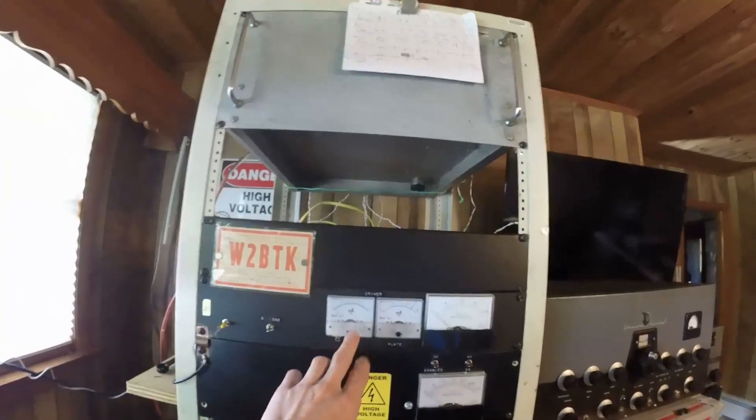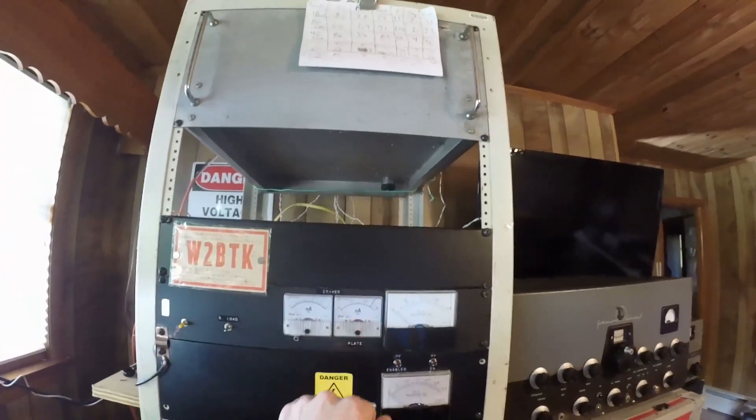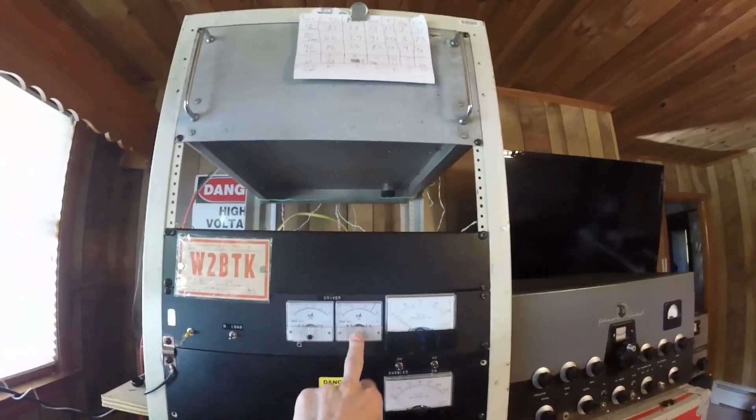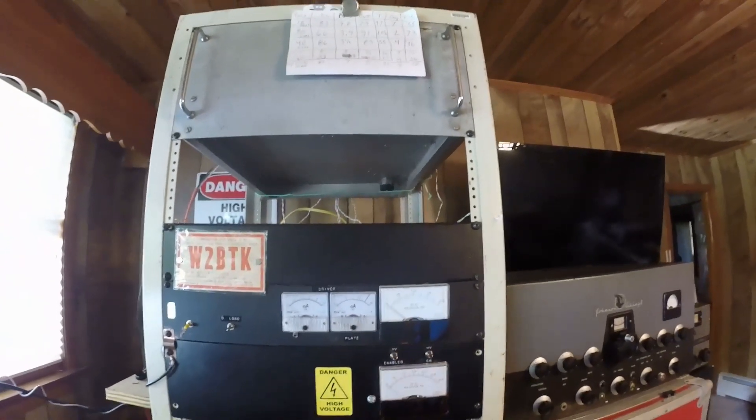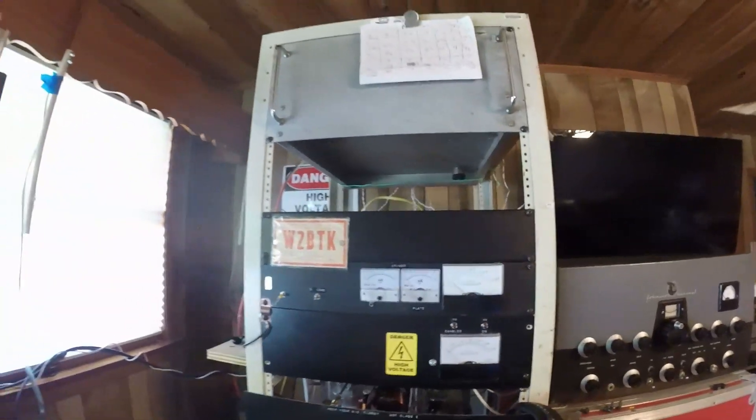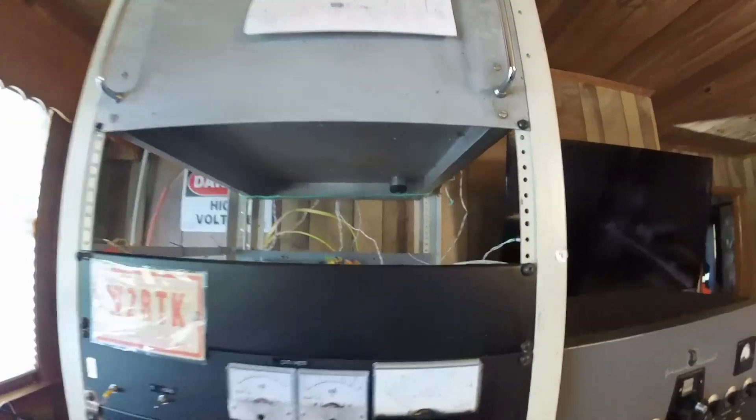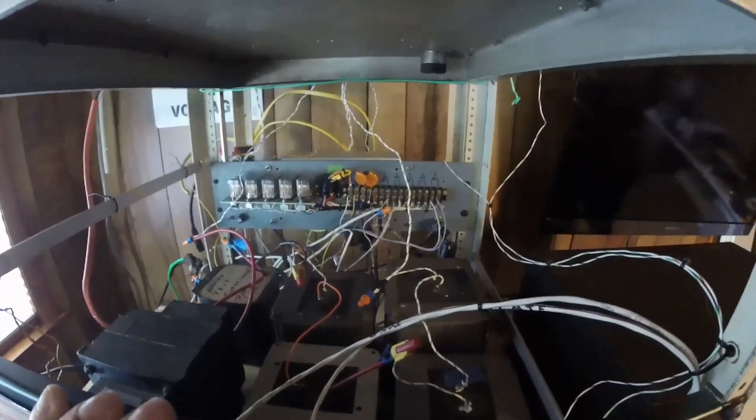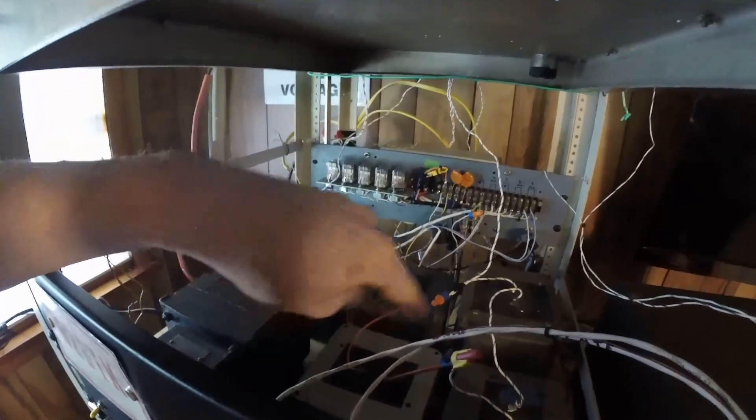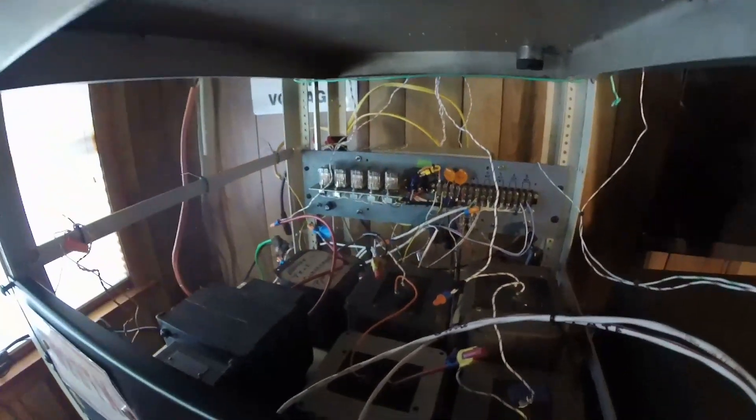At this time I don't use it regularly because I still have to work a few bugs out, but I'm working hard on it and there's going to be more on this later. Above that you see some metering. This metering is for the Johnson Viking 2. We have our grid current, plate current, and plate voltage.